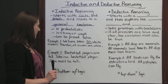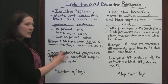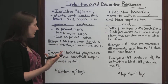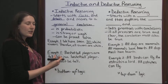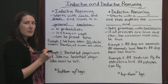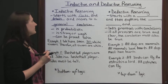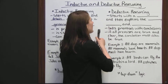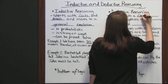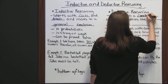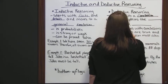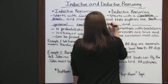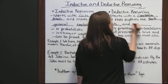This is called bottom-up logic. We start at the bottom with our examples and we build on those facts, details, and examples to come to a conclusion. Next, let's talk about deductive reasoning. Deductive reasoning starts with a conclusion and then explains the facts, details, and examples that support it.